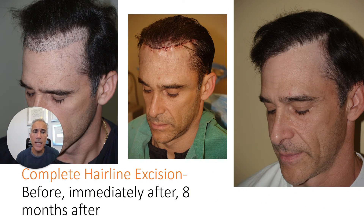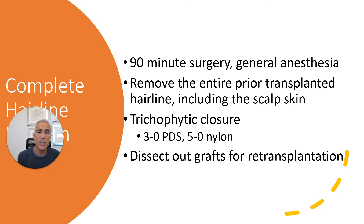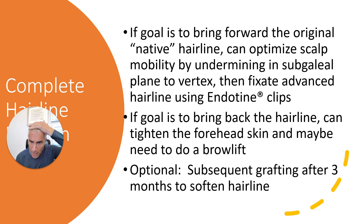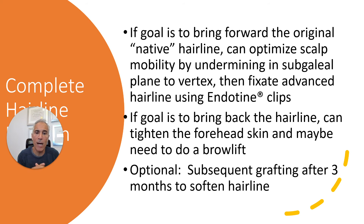There's also the technique of complete hairline excision — before, immediately after, and eight months after — where the complete hairline including all scarred skin is excised. This is usually performed under general anesthesia. All the skin with all the hairline grafts is removed; closure is done trichophytically, and the grafts can be dissected out from the excised tissue for retransplanting. If the goal is a lower hairline, a hairline lowering surgery can be performed. In cases where the patient desires a higher hairline, we can tighten the forehead skin — almost like a modified brow lift. After healing, grafting can be performed.